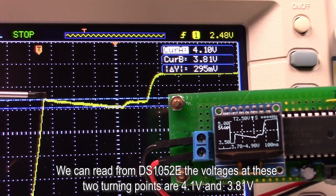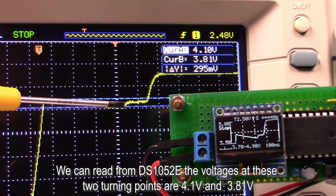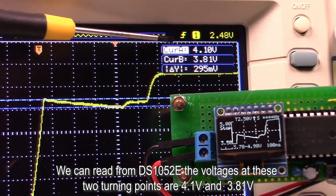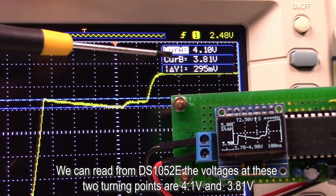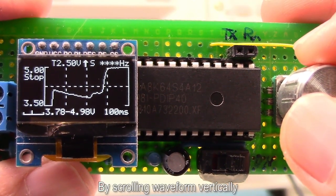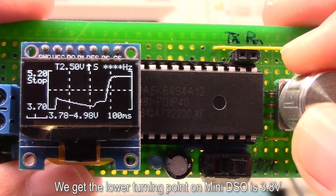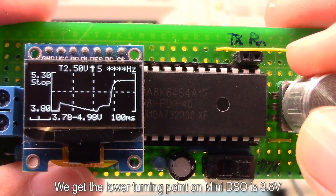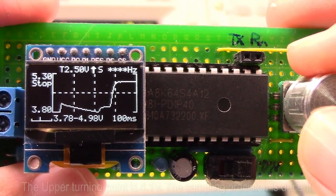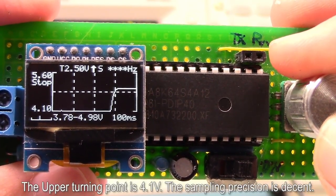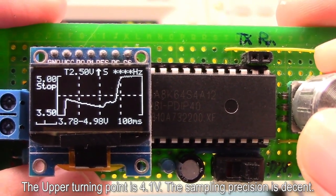We can read from DS1052E, the voltages at these two turning points are 4.1V and 3.81V. By scrolling waveform vertically, we get the lower turning point on MiniDSO is 3.8V. The upper turning point is 4.1V. The sampling precision is decent.